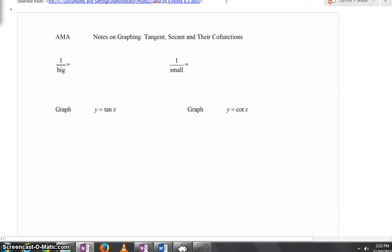Okay, so graphing tangent, secant, and their co-functions. Before we even jump into that, I guess a couple of basic common sense ideas. We use this so much in calculus: 1 over big, 1 over something very large, is small. That really doesn't apply as much in today's lesson, but it's always good to review that.